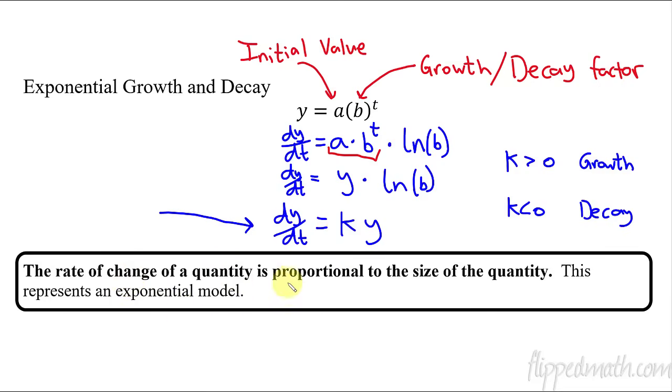All right, so now let's read this. The rate of change of a quantity is proportional to the size of the quantity. Remember how we did this at the beginning of this unit? This proportionality stuff is proportional. That's why I used k. The rate of change of a quantity, in this case, the quantity is just y. The rate of change of y, which is dy dt, is proportional to the size of y, the quantity. So, proportional to the same quantity. So, the idea of this lesson is recognizing how this represents exponential models. This dy over dt equals k times y.